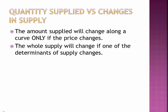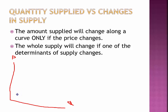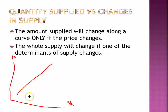Similarly, quantity supplied is very different from changes in supply. On a supply curve with price on the y-axis and quantity on the x-axis, if I raise the price, that changes the quantity supplied — it goes up. If I lower the price, it decreases the quantity supplied. The curve itself doesn't change. But if, say, it suddenly becomes cheaper to produce eggs, supply would increase and the whole curve shifts to the right.